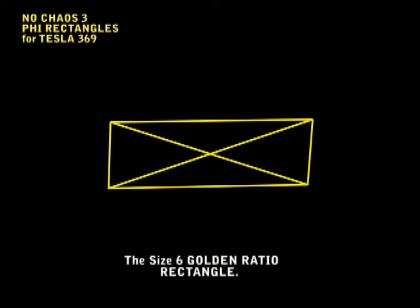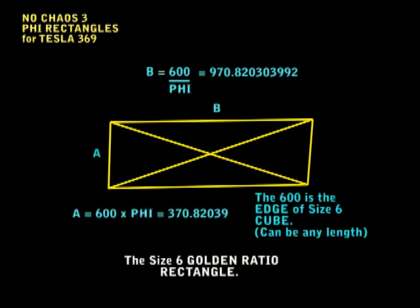Let's take a look at them. The rectangle in front is a size 6 golden ratio rectangle. I'm calling it size 6 because I'm working with the edge of a size 6 cube, which is 600. Now you can see the math calculations shown in front, all coming from phi, the golden ratio.